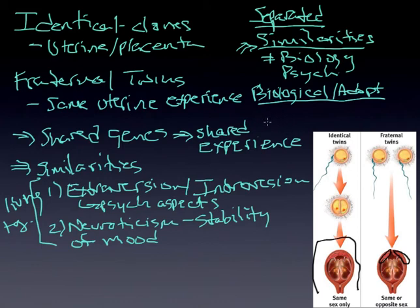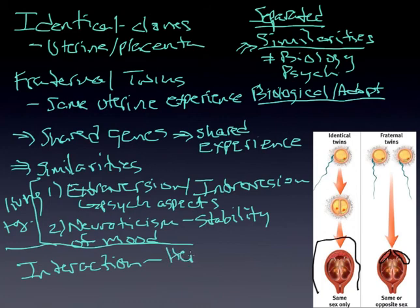Now, the thing that I think you have to really underline, and I'll go down here to try to highlight this, is the biggest aspect is something we refer to as interaction. An interaction between heredity, heredity, heredities are awful, and social or environmental.